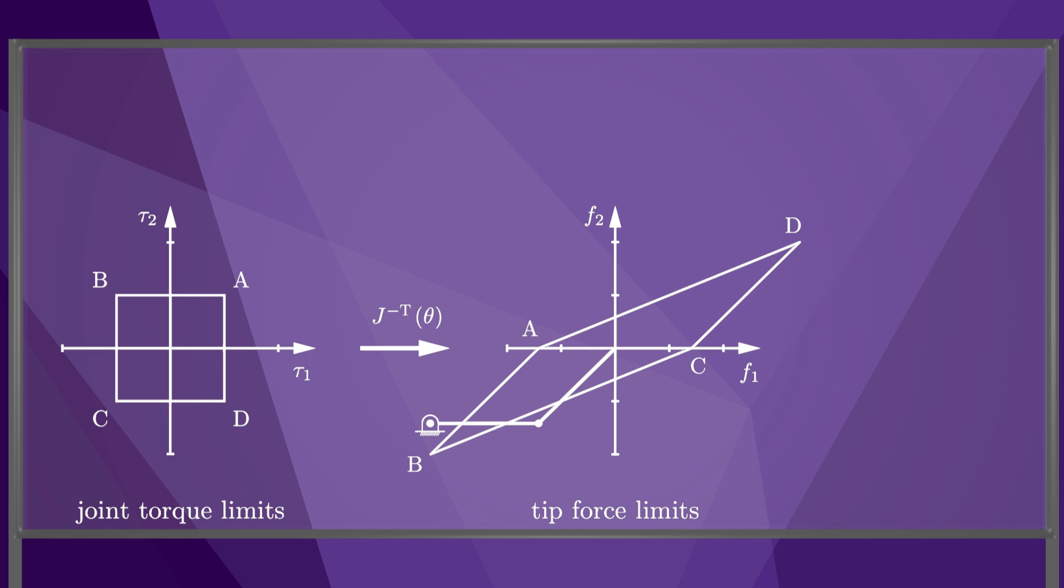In this configuration, the arm can apply large forces up and to the right at point D, but much smaller forces up and to the left. The reason is clear. A line of force up and to the right passes close to the joints, therefore requiring little torque about the joints, while a line of force up and to the left passes far from the joints, requiring larger torque.